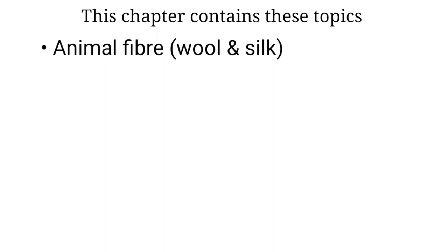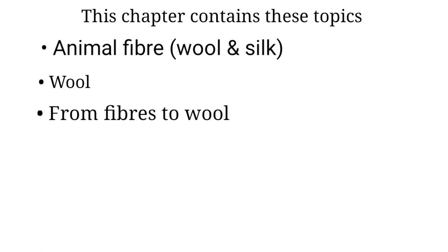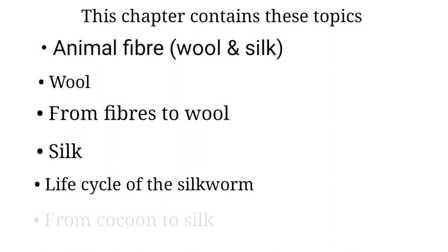The first topic is animal fiber, which is wool and silk. Next comes wool, and then from fibers to wool — the journey of wool from the rearing and breeding of wool-yielding animals to the final finished wool. Then silk, followed by the life history of silk moth, and last but not least, from cocoon to silk. These are the topics of this chapter.